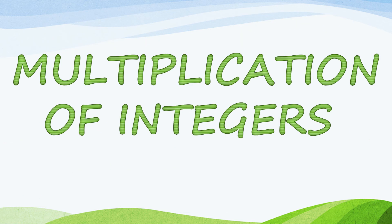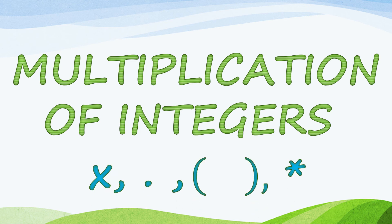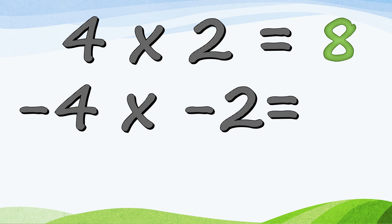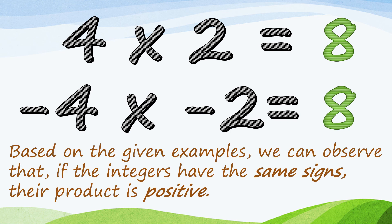We will discuss further the multiplication of integers. Please familiarize the symbols of multiplication of integers. 4 times 2 is equal to 8. Negative 4 times negative 2 is still equal to 8. Based on the given examples, we can observe that if the integers have the same signs — both positive or both negative — their product is positive.